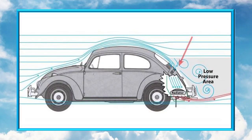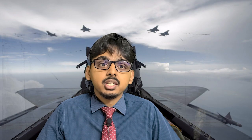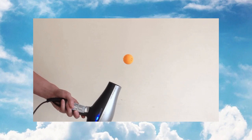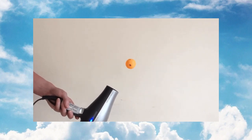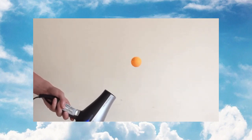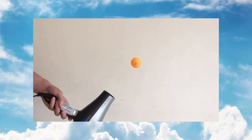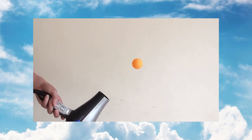The Coanda effect is the tendency of a fluid to flow along a solid surface and follow its curvature rather than separate away from it. Here is an example of the Coanda effect in action. See how the ping pong ball is kept afloat by the hairdryer? Believe it or not, this is the same effect that contributes to keeping airplanes airborne.